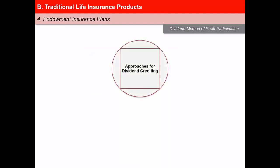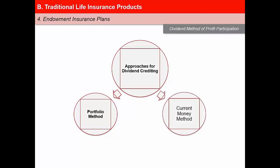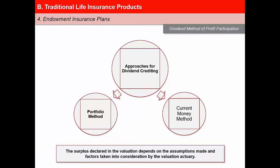In certain markets like the USA, profits are shared in the form of dividends. Two approaches have been followed for dividend crediting. The first is the portfolio method, where the total investment return on the portfolio held by the company is determined and all policyholders are credited their share of the divisible surplus. The second is the current money method, where the return depends on when the investment is made and the rate secured at the time of investment. The surplus declared in the valuation depends on the assumptions made and the factors taken into consideration by the valuation actuary.